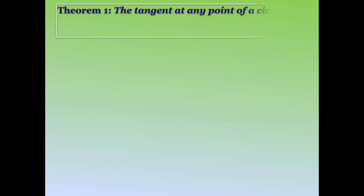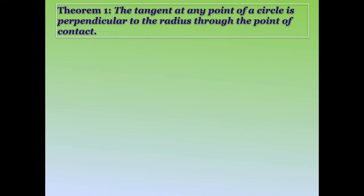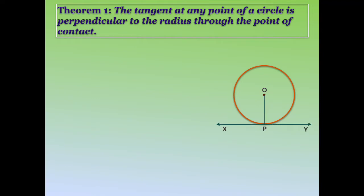There are a few theorems about tangents and circles. The first theorem states that the tangent at any point of a circle is perpendicular to the radius through the point of contact. So if a circle with center O has a tangent XY touching the circle at point P, then radius OP will be perpendicular to the tangent line XY.